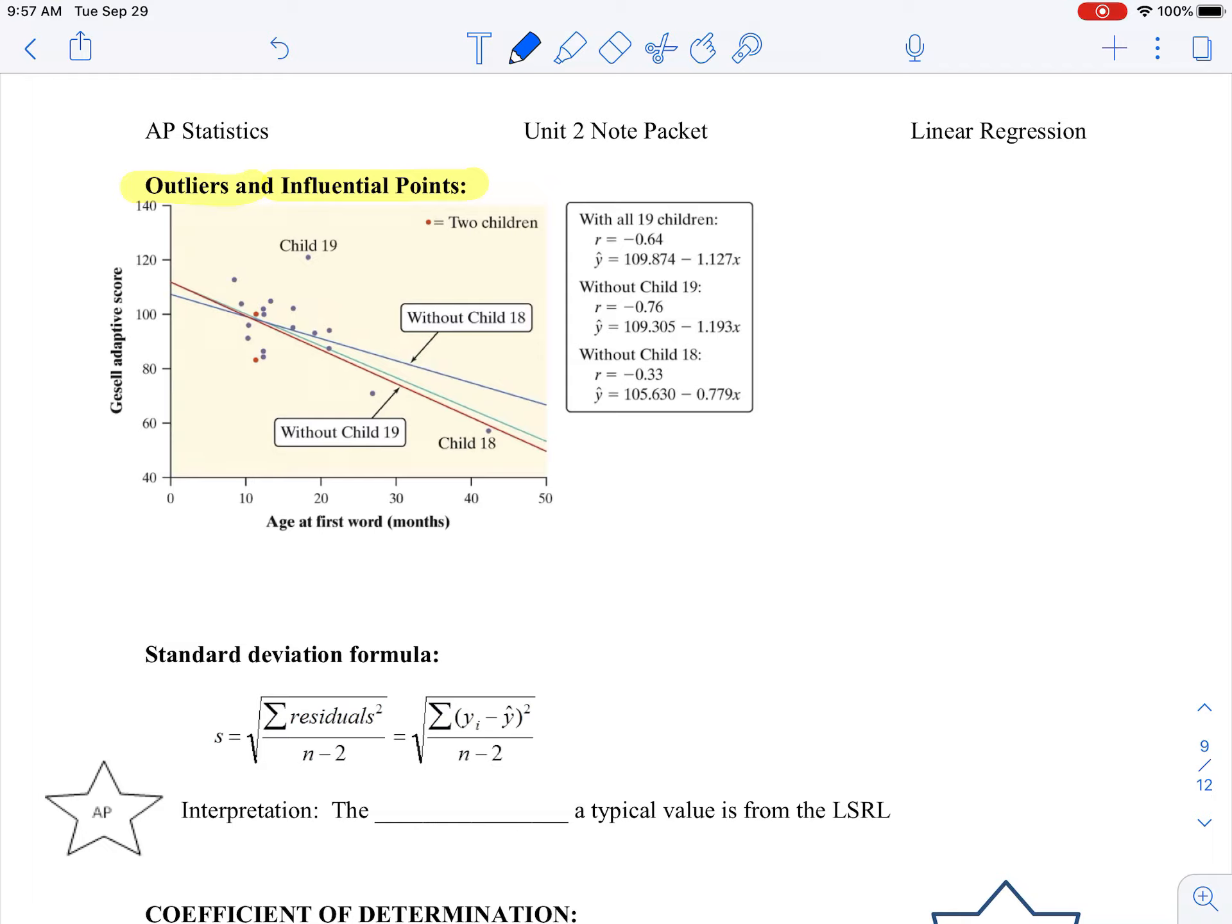First, an influential point changes the slope of the regression line. That's what we have to remember. An outlier is just a point that we've already talked about what an outlier is. And actually, I think we hit influential point too. But an outlier is just a point that doesn't fit the overall pattern. We talk about an influential point. An influential point changes the regression line.